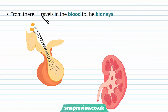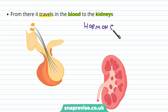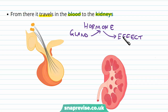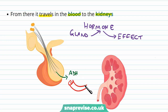When ADH is released from the pituitary gland, it travels in the blood to the kidneys. A hormone is basically a chemical released from a particular gland that travels via the blood to act at a distant target site. In exactly the same way, the posterior pituitary gland releases ADH, it travels via the blood system, and eventually reaches the nephrons in the kidney, where it has its effect.